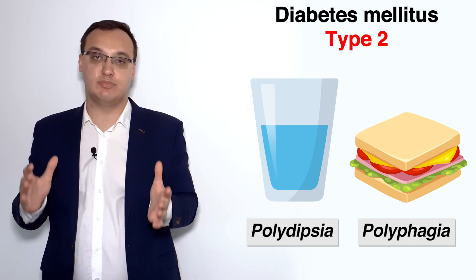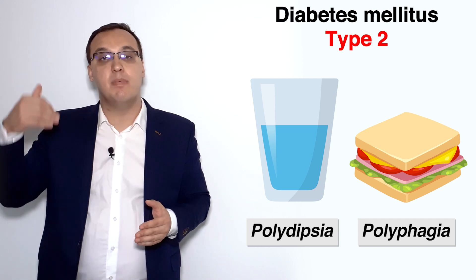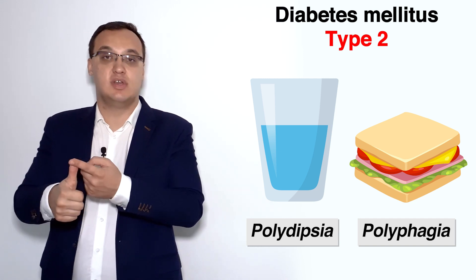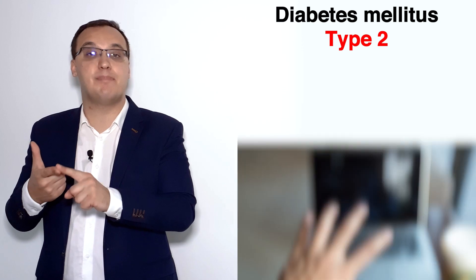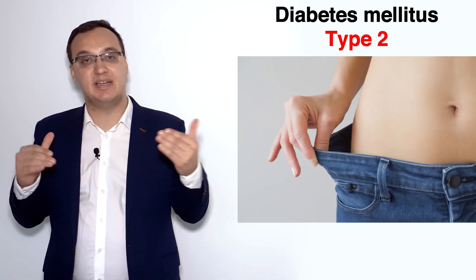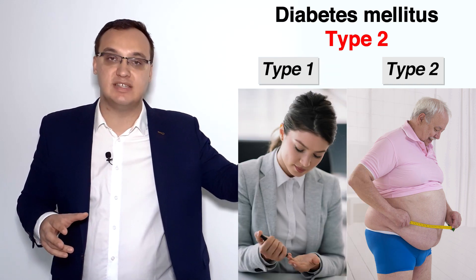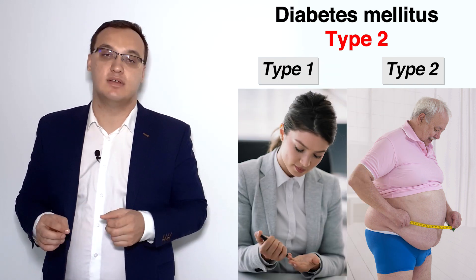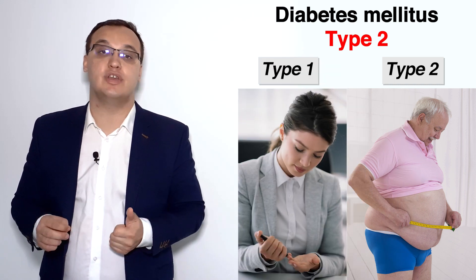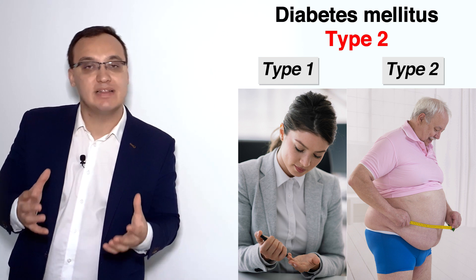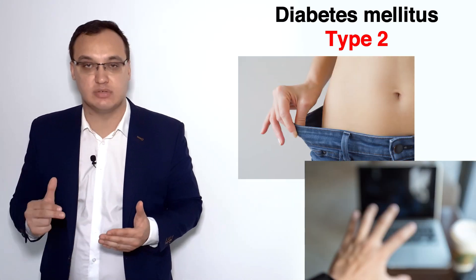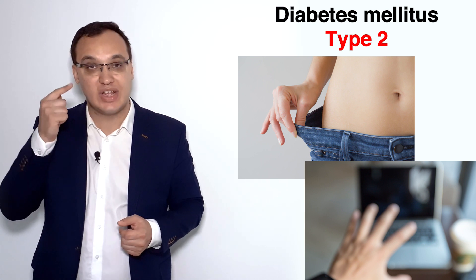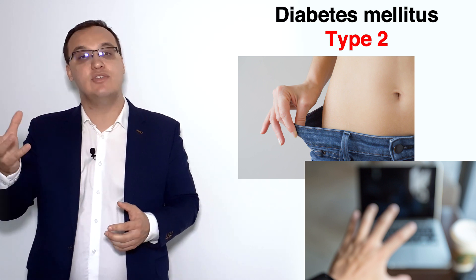These are the most common symptoms of diabetes mellitus. Beyond these, we also have blurred vision and, in some cases, weight loss. In type 2 diabetes patients we usually see an obese patient, while in type 1 we usually see a lean body weight. Diabetes mellitus affects the retina in the eye, which can cause the blurred vision.